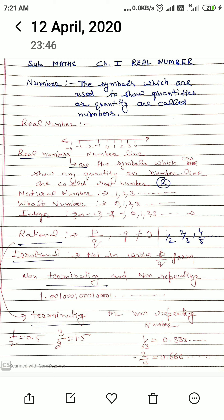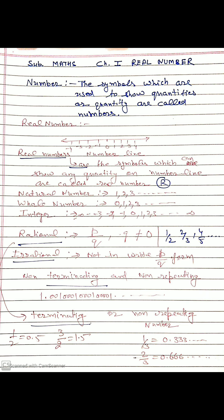Rational numbers: such numbers which are written in the form of P upon Q, where P and Q are integers and Q not equal to zero.